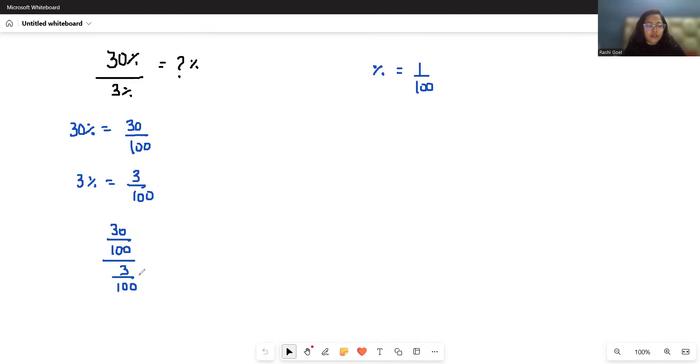When we have given four values in fraction, then the inner one multiplied together and the outer one multiplied together. So it becomes 30 by 100 multiply 100 by 3. This will cancel out, so 30 by 3 which is 10.